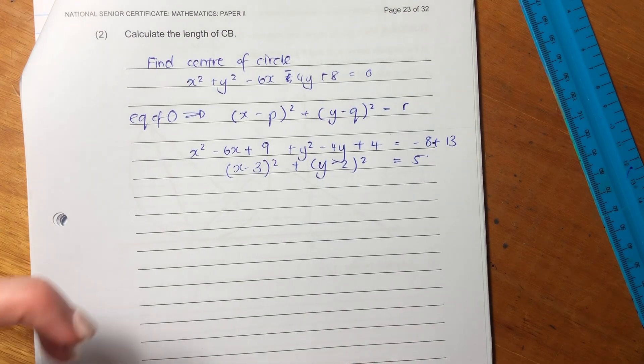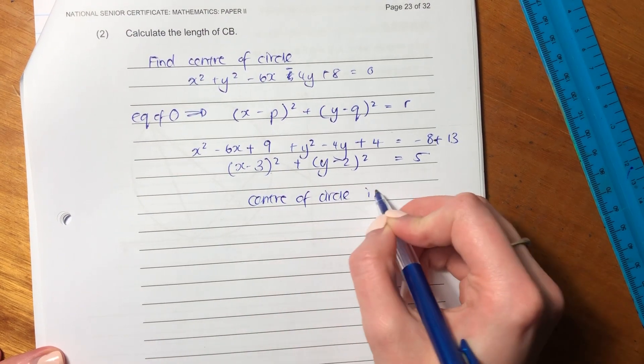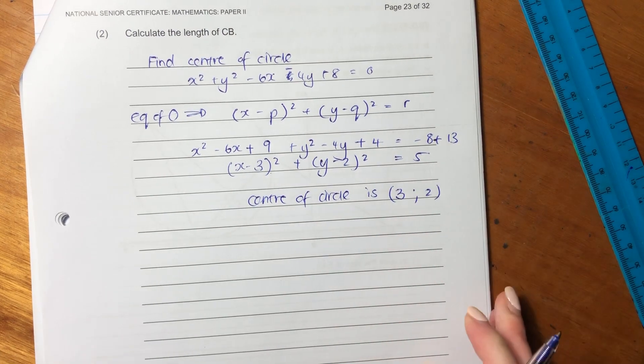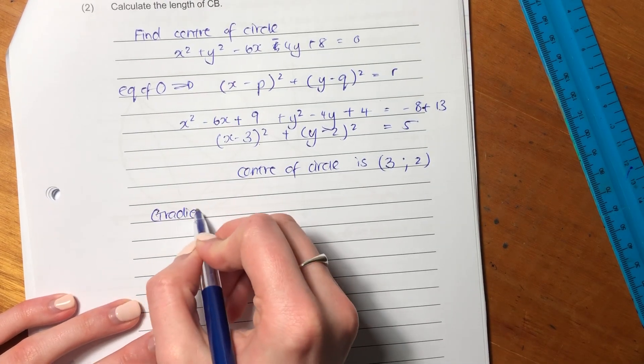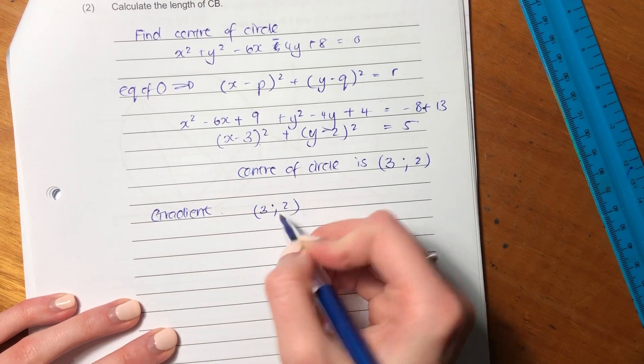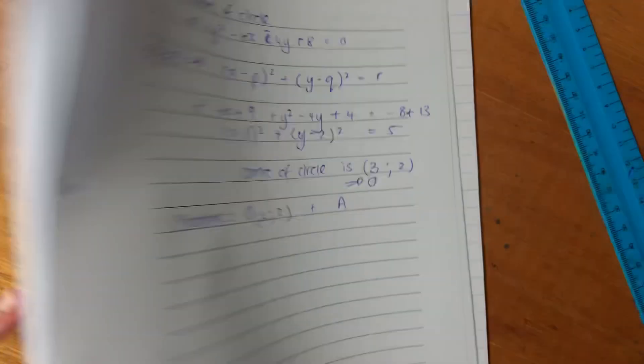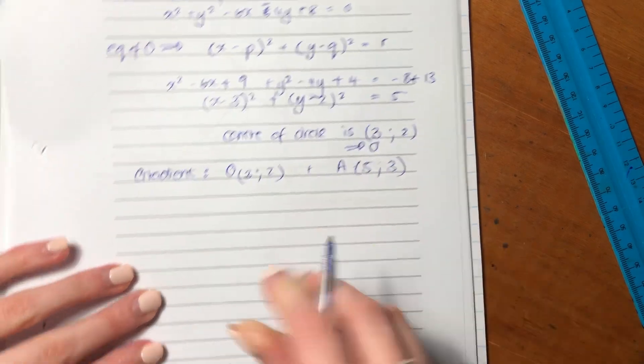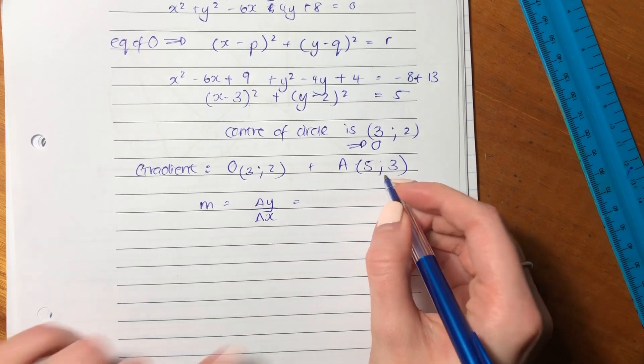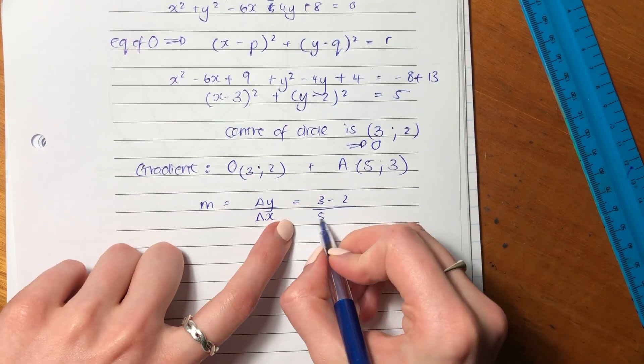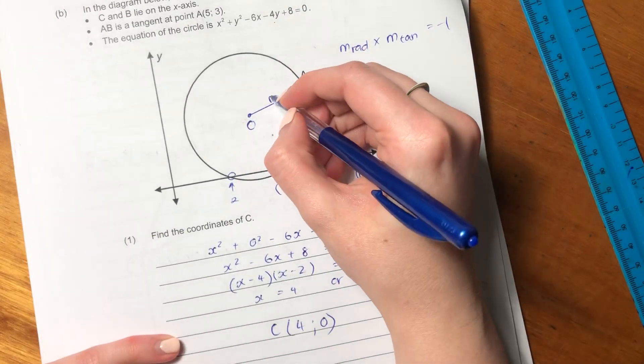So we know that the center of circle is 3 and 2. That's the center of our circle. So now we have two points. So now we want the gradient between 3 and 2. I'm going to call the center of the circle O, and A, which is 5 and 3. So remember gradient is change in y over change in x. So I'm going to say 3 minus 2 over 5 minus 3, which gives me 1 over 2. So that's my gradient of my radius, the gradient of this radius there.